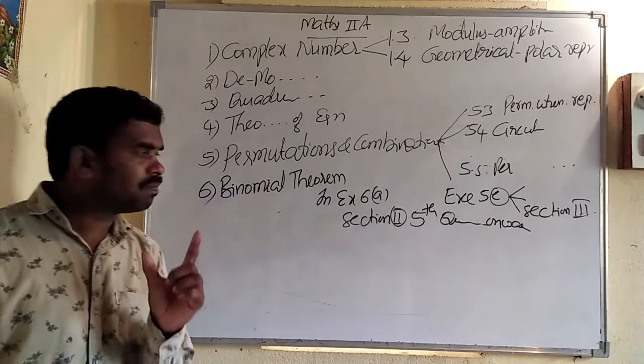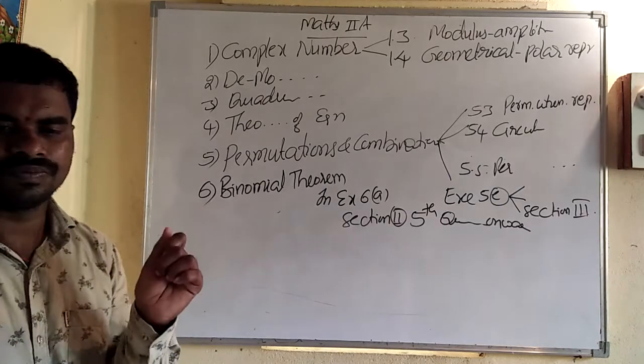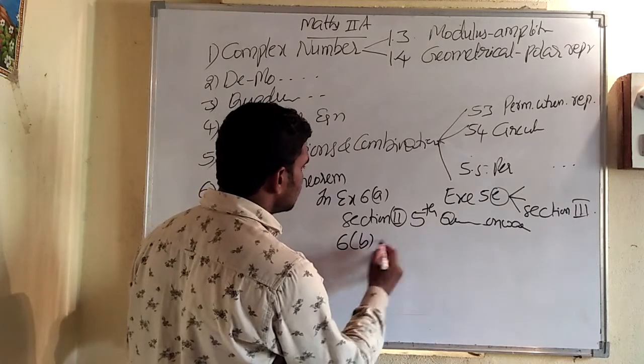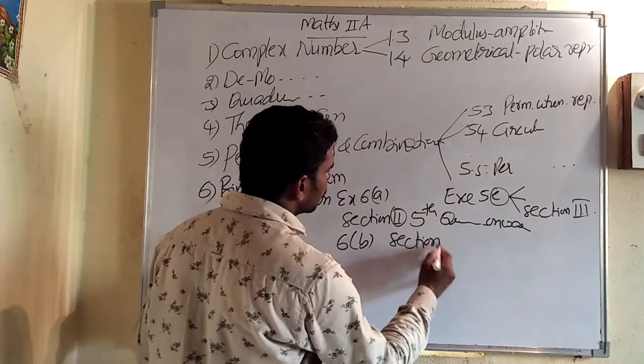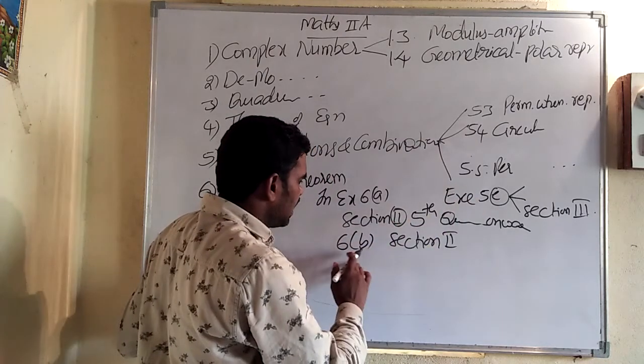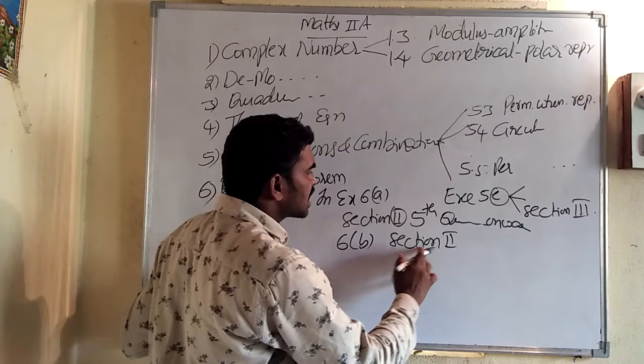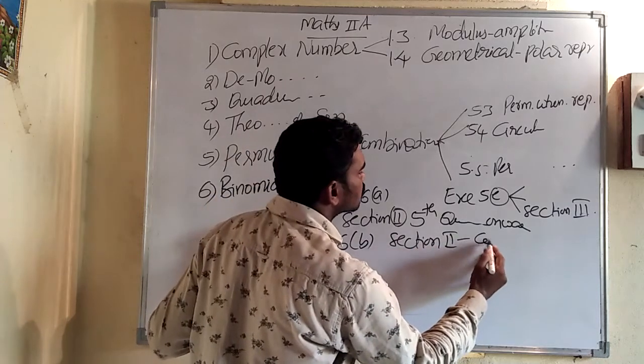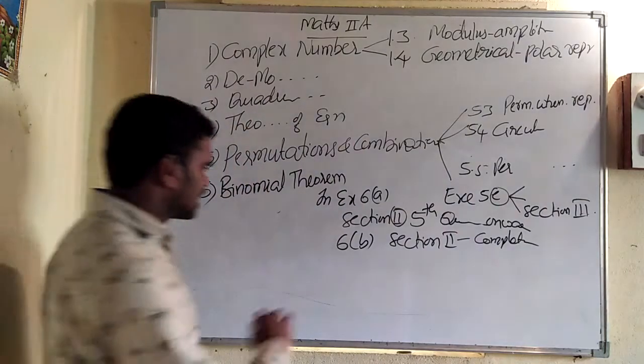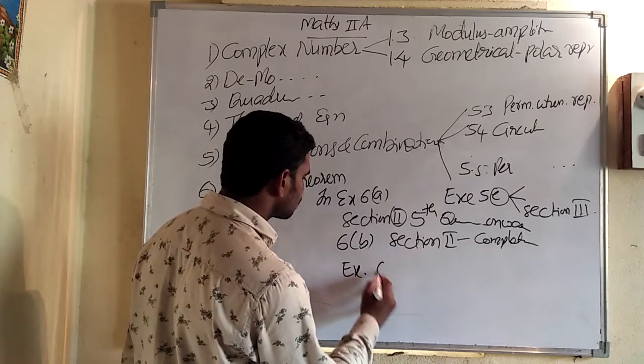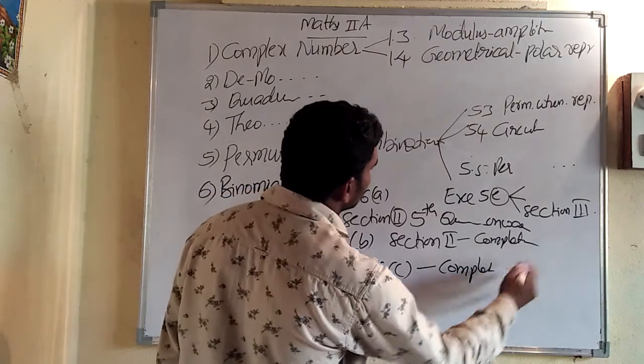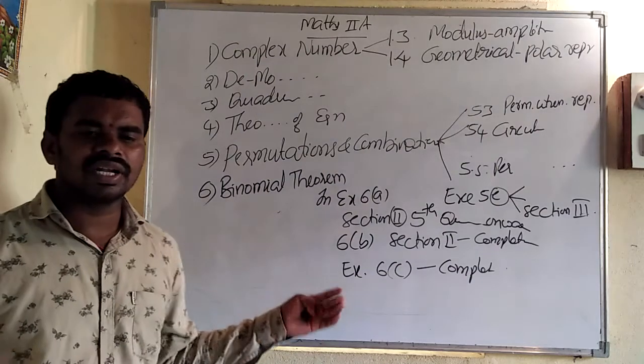Next, in exercise 6B, section 2 related examples. Exercise 6B, complete section 2 is deleted. And exercise 6C, complete. Exercise 6C is also deleted. So these are deleted.